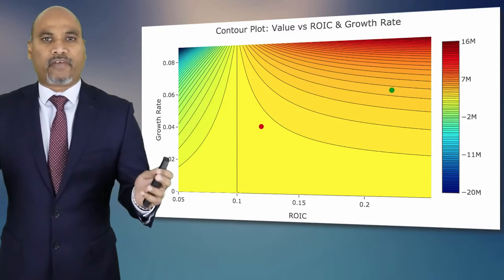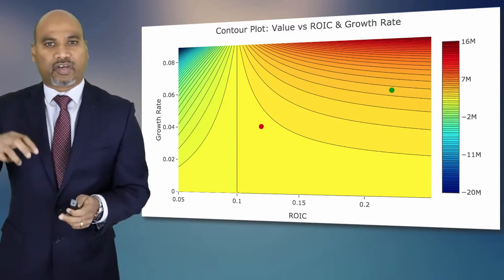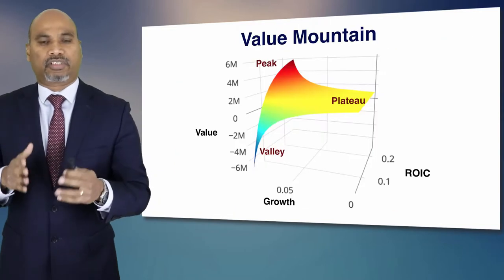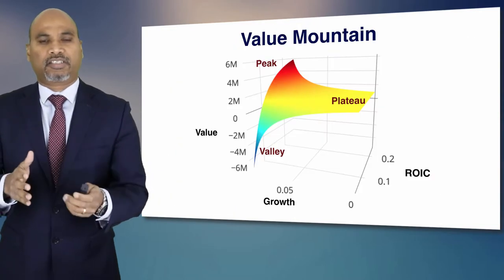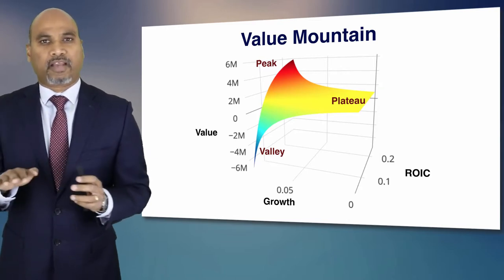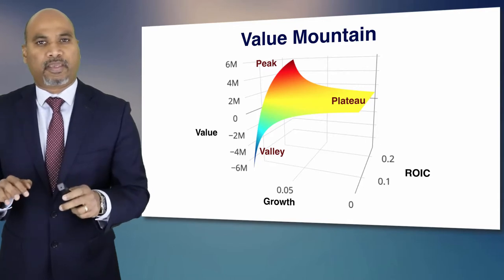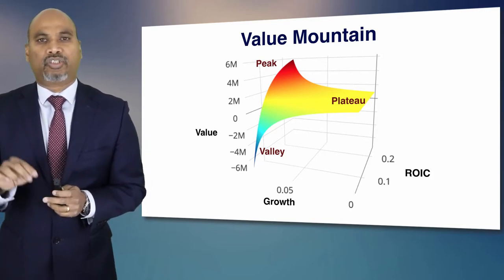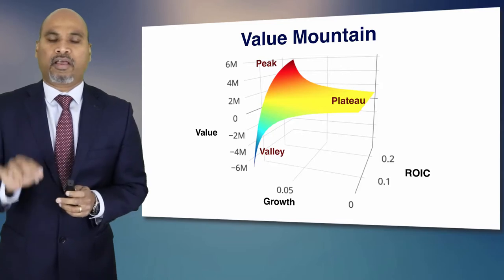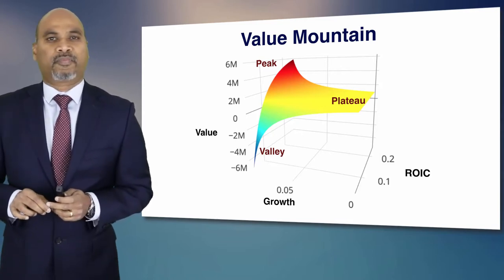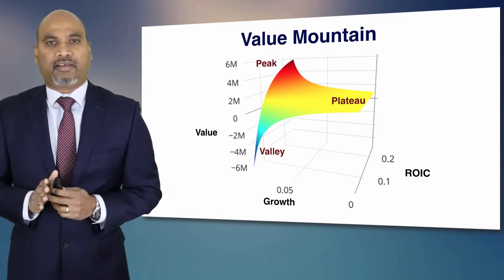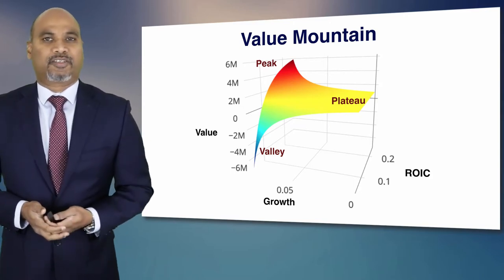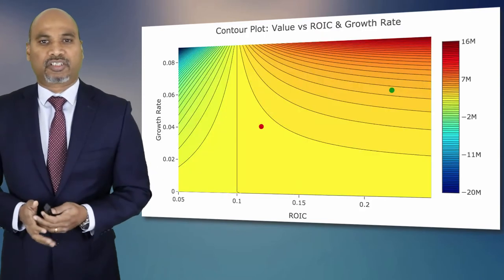What's the value mountain I've been talking about? Take this plot into three dimensions — look at it from a helicopter perspective — and this is how it looks. There is a plateau, there is a valley, and there is a peak. Depending on your position on the ROIC and growth rate axes, you can simply pinpoint where your operations are at the moment. Are you on the plateau? Are you on the path towards the peak? Or are you on the edge of the cliff, about to fall into the valley?